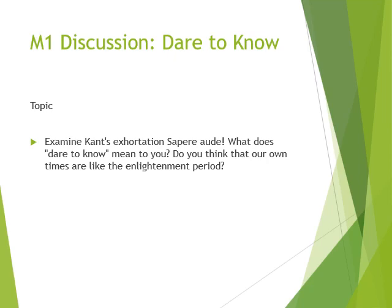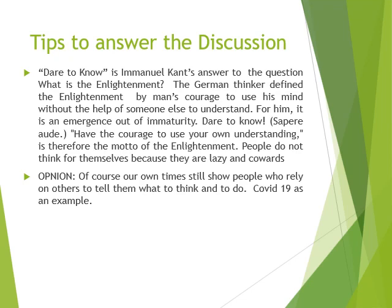The discussion asks: what does 'dare to know' mean to you, and do you think that our own times are like the Enlightenment period? To give you a brief idea — the Enlightenment is the time of the 17th century when thinkers, who are called Enlightenment thinkers, started discussing the need for human beings to be rational beings, to use their reason, and not to rely on others to make decisions for themselves. According to these thinkers, Enlightenment means freedom of thinking, freedom of speech, and freedom to take decisions.